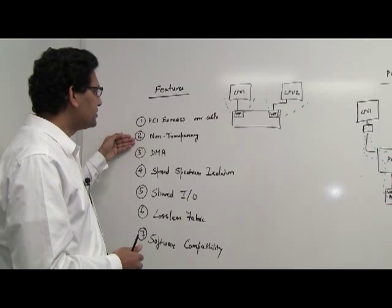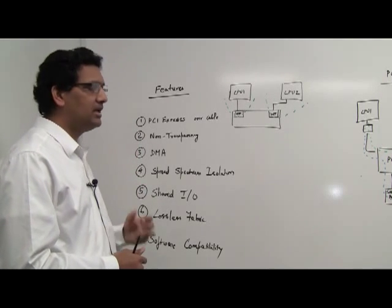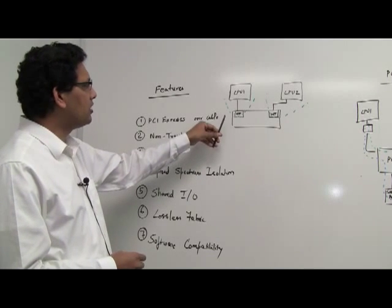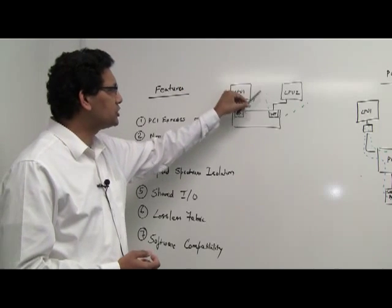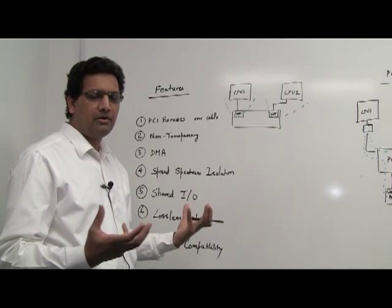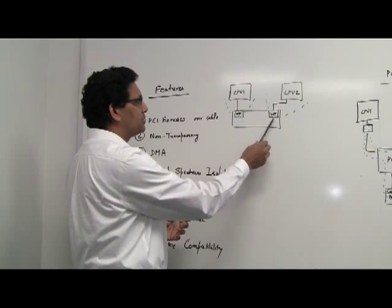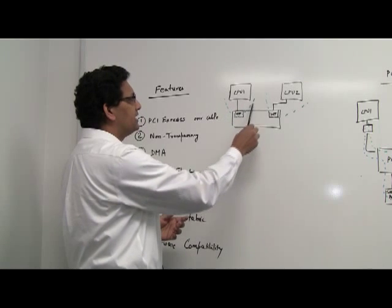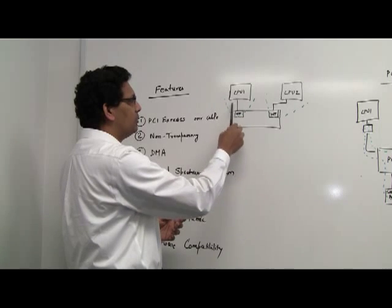The other key feature is non-transparency in a PCI switch. What does non-transparency do for you? It allows you to isolate the host domains among the multiple hosts. In this scenario, I've drawn a switch with two non-transparent ports. In this case, CPU1 enumerates and discovers all the devices in this domain, and in this domain, CPU2 does all the discovery enumeration.